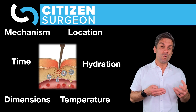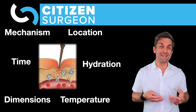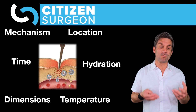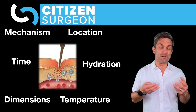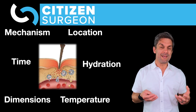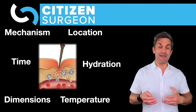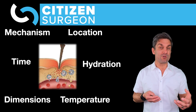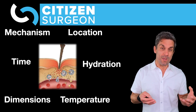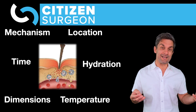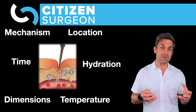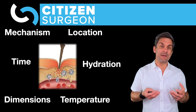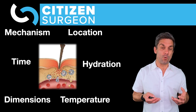Fourth is hydration: moist environments heal better than dry ones, so if you have a dry, desiccated wound, you may need a dressing to keep the wound bed hydrated — we'll cover that in the fourth video on dressings. Fifth is dimension: a large open wound, say 5 by 7 centimeters, where edges won't come together will need to heal by secondary intention, possibly using vacuum-assisted closure with negative pressure dressing. Finally, temperature: we want to ensure the environment is warm and not hypothermic for the wound to heal.